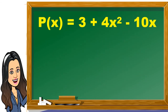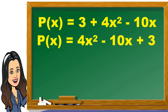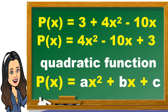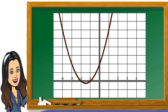p(x) = 3 + 4x² - 10x. This is not written in standard form, so let us rewrite it: p(x) = 4x² - 10x + 3. The degree of the polynomial is 2, which makes it a quadratic function. It is in the form p(x) = ax² + bx + c, where a, b, c are numbers and a ≠ 0. This is also called a second-degree polynomial. Here is an example of the graph of a quadratic function — it is called a parabola.